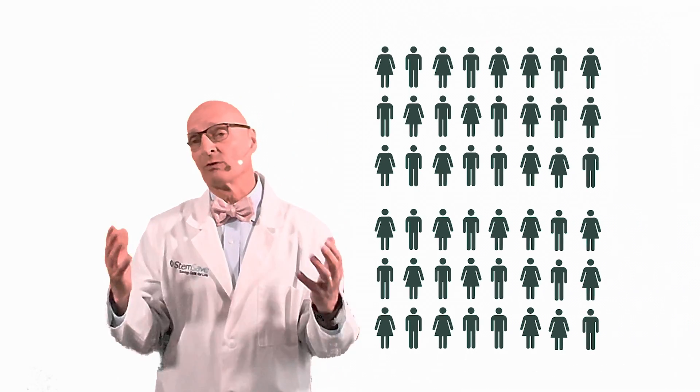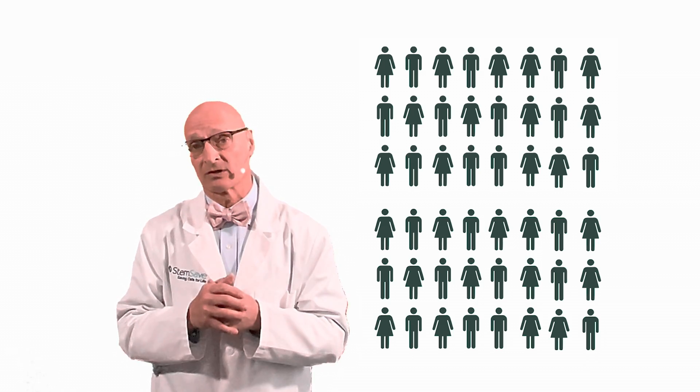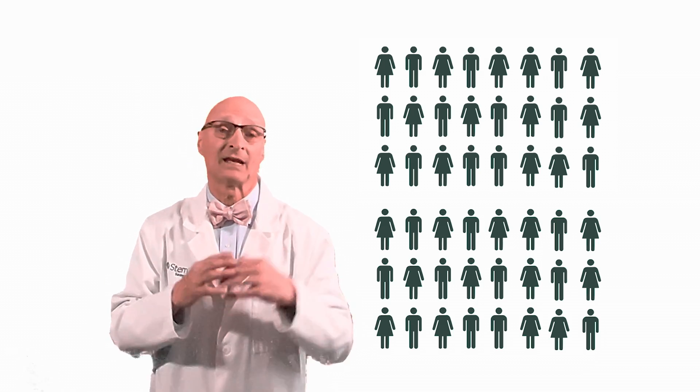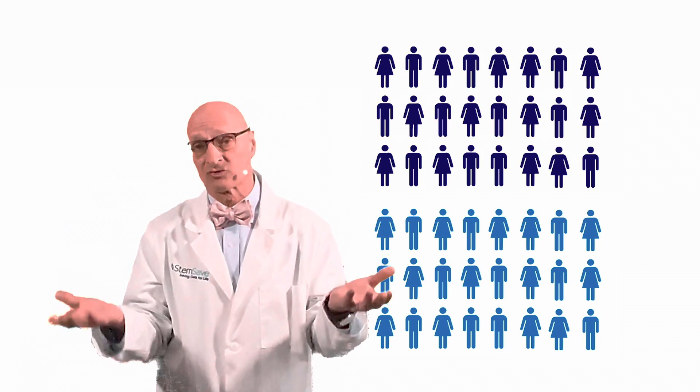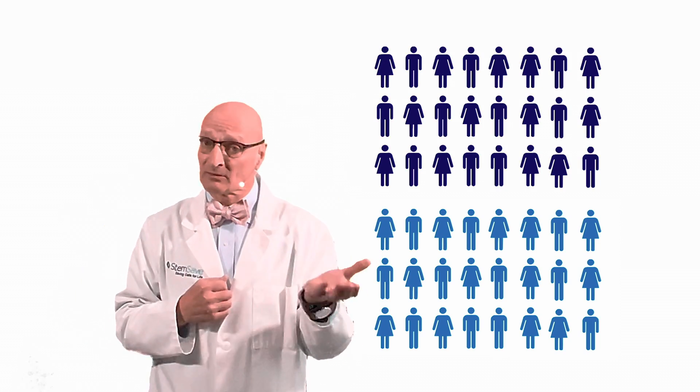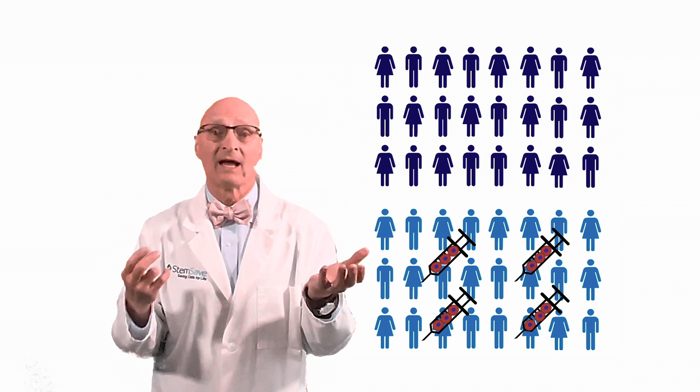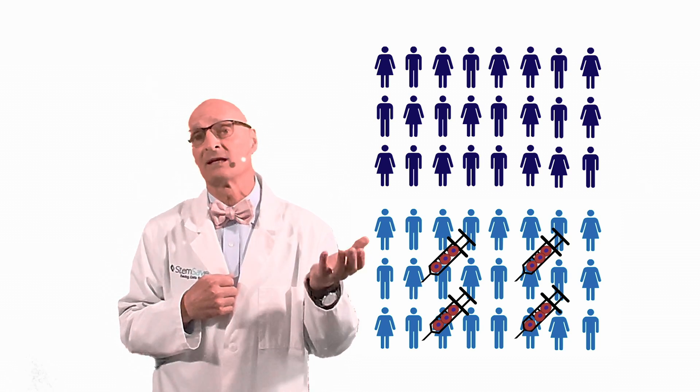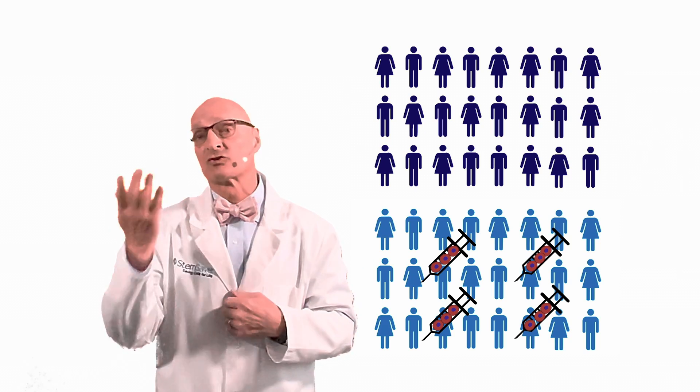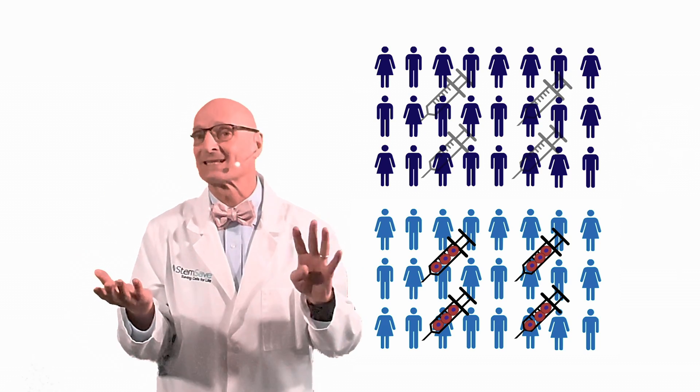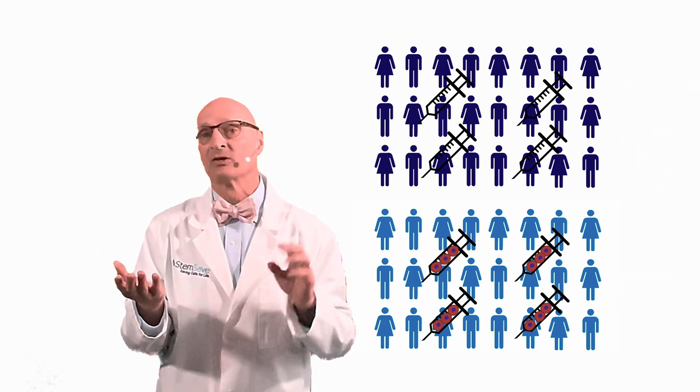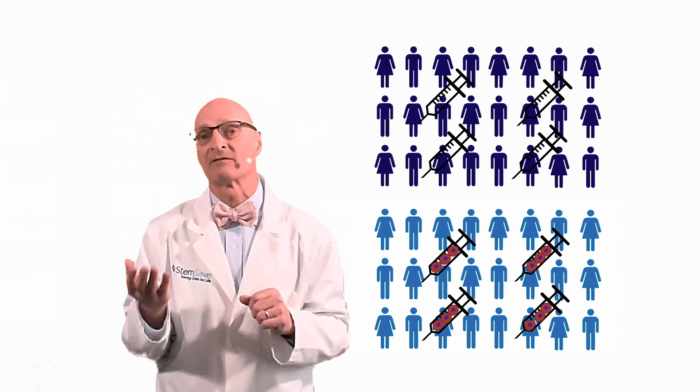The trial will include 48 participants diagnosed with depression who will be randomized into an experimental group and a control group. The experimental group will receive four DPSC injections two weeks apart and daily doses of the antidepressant fluoxetine hydrochloride. The control group will receive four placebo injections two weeks apart and daily doses of the same antidepressant.